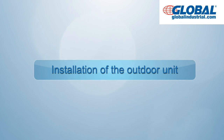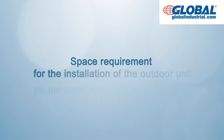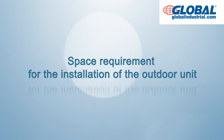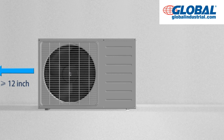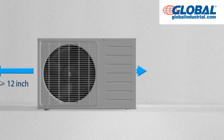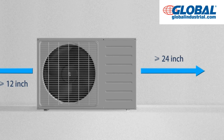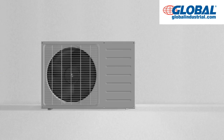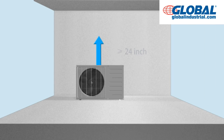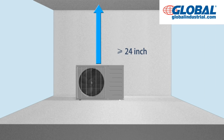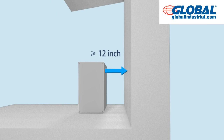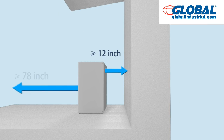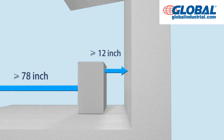Installation of the outdoor unit. Space requirements: no less than 12 inches for left space, no less than 24 inches for right space, no less than 24 inches for upper space, no less than 12 inches for back space, and no less than 78 inches for front space.